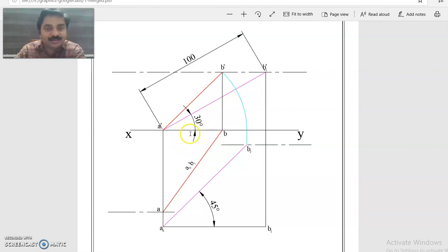Given theta and phi, how can this be done? First, we will look at A dash because A is on HP. We will draw from A dash at an angle of 30 degrees, equal to theta, the angle made by the line with HP. So we can locate B1 dash.